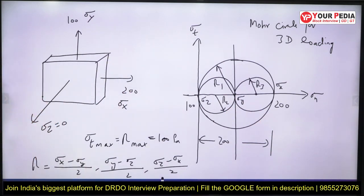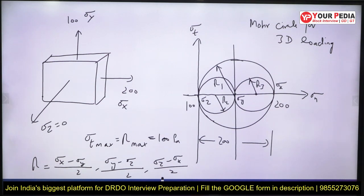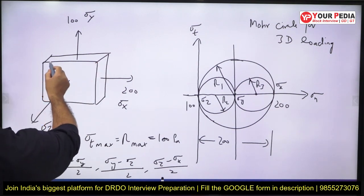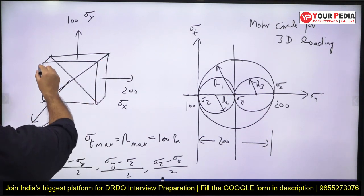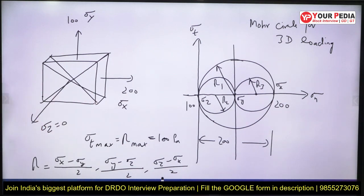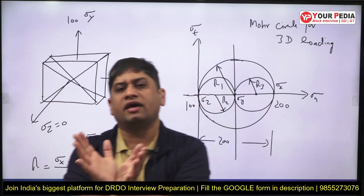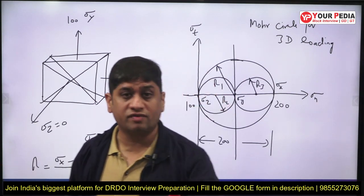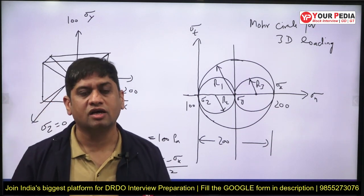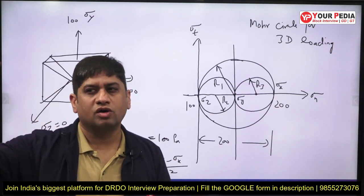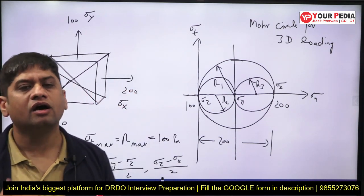The maximum is R1 = 100, which corresponds to the XZ plane. So the body will fail on the XZ plane. The question is: which physical plane is the XZ plane? Can you identify it on the diagram and tell on which plane this body is going to fail? That shear plane concept is a very important question — think it through. This was a real DRDO question.